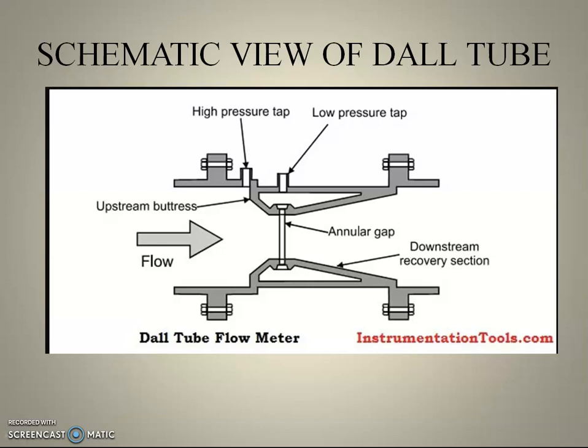As like Venturi tube, it consists of three sections: converging section, throat section, and diverging section. In the converging section, the liquid flows and its diameter is reduced in the pipeline. In the throat section, the reduced diameter is maintained, and in the diverging section, the reduced diameter comes back to the original diameter of the pipeline.